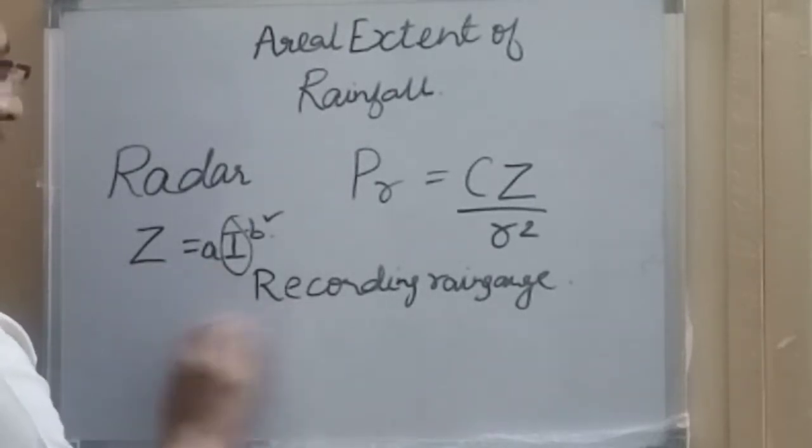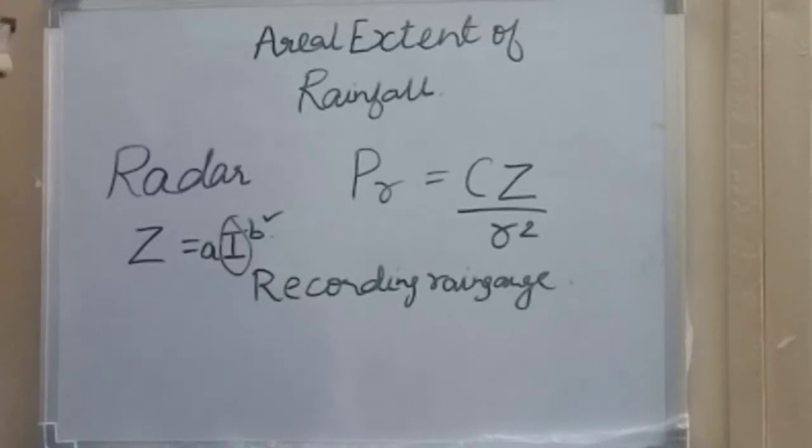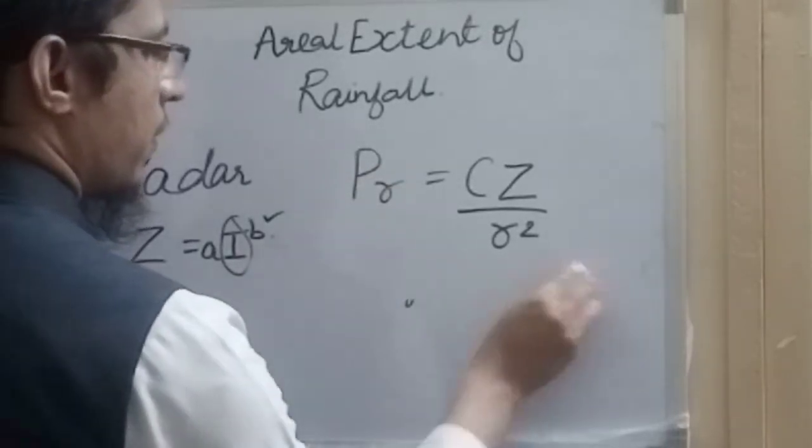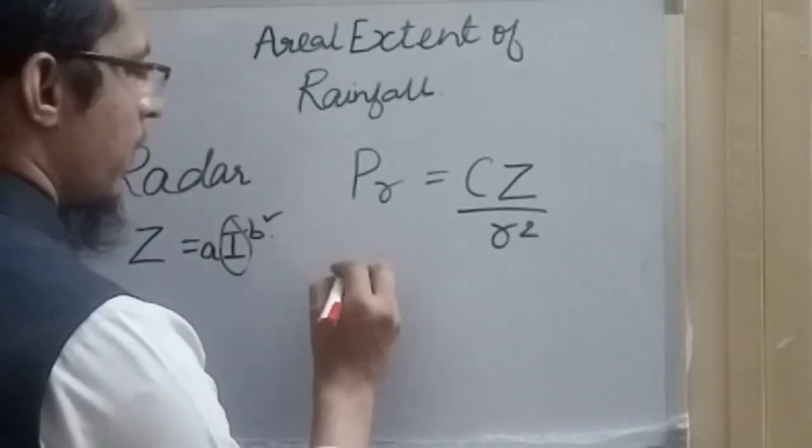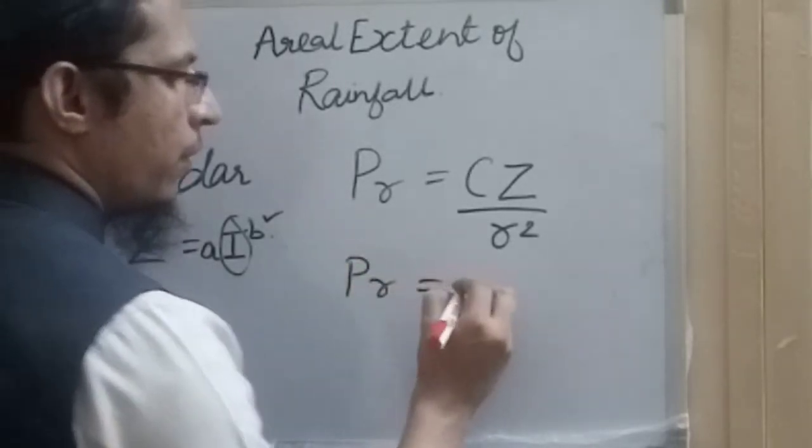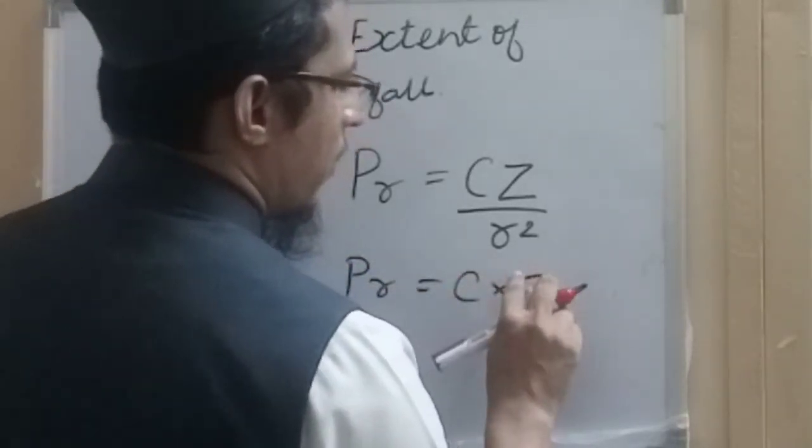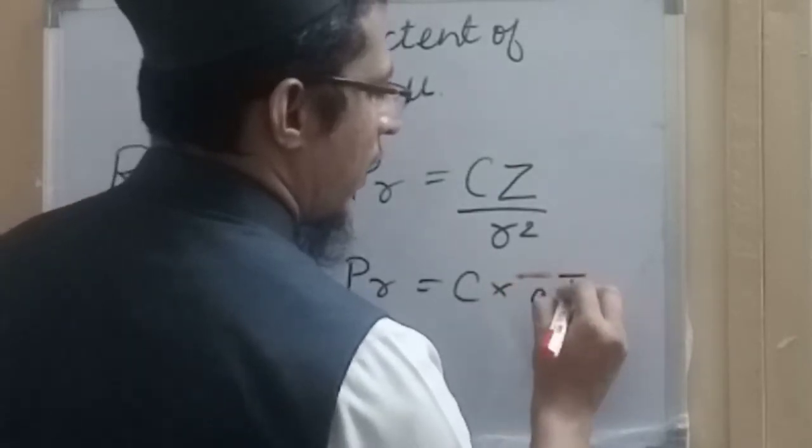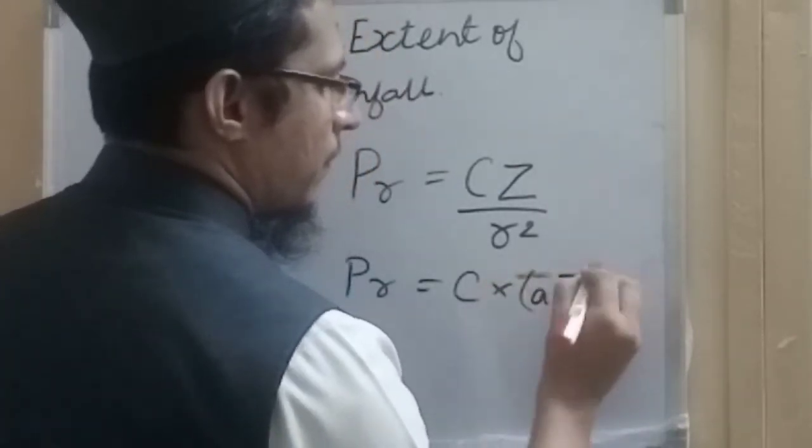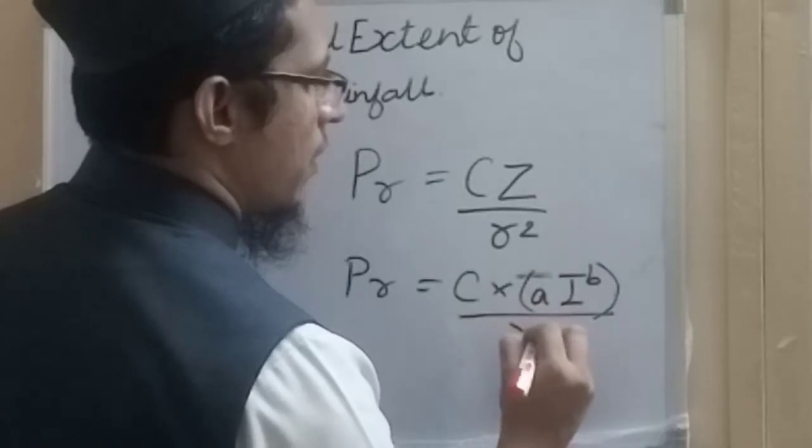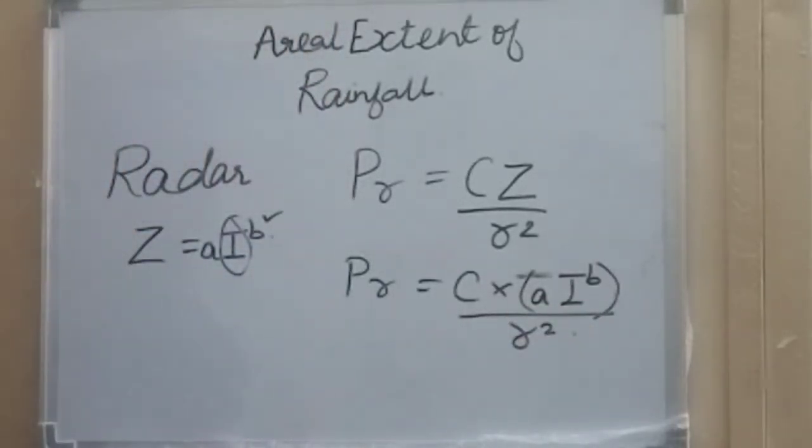Once these values are obtained, we can easily use this expression in the equation. So it will be Pr equals C into a I to the power b upon r squared.